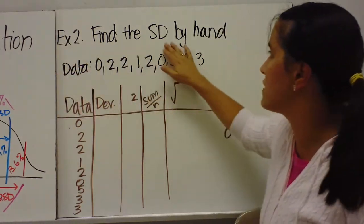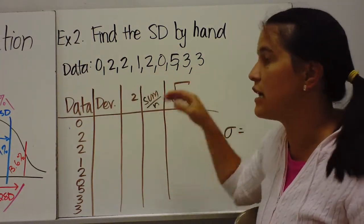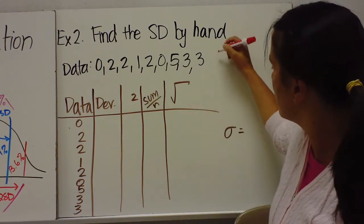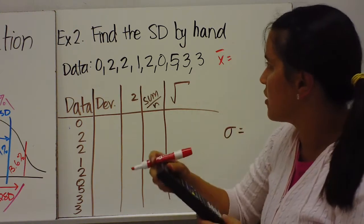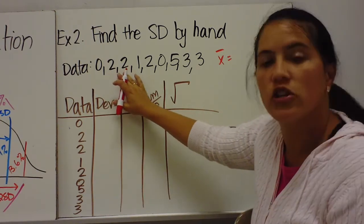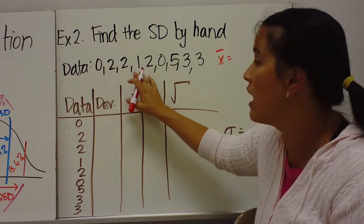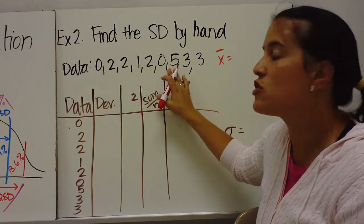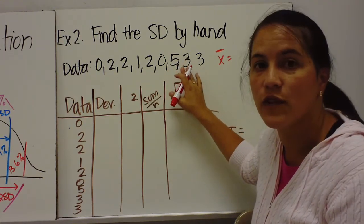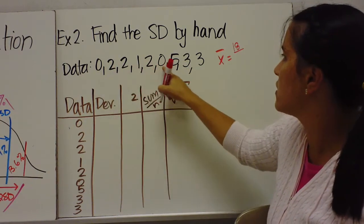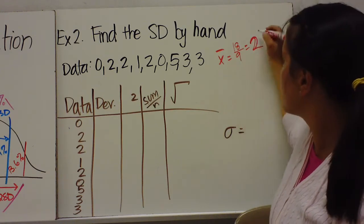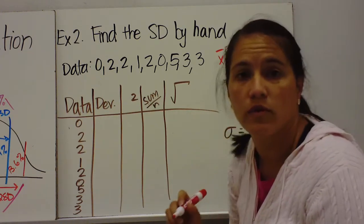Example two: find the standard deviation by hand. First, find the mean by adding all the data values: 2+2+1+2+5+3+3 = 18, divided by 9, so the mean is 2.